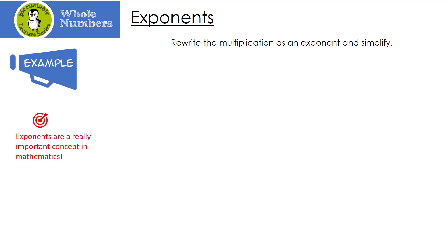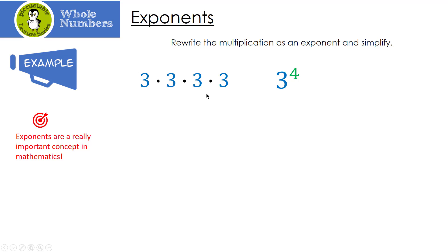Rewrite the multiplication as an exponent and simplify. Three times three times three times three is three to the fourth. Three is my base number — that's the number that I'm multiplying. Four is the number of times I'm multiplying the three: one, two, three, four. Three to the fourth turns out to be 81.